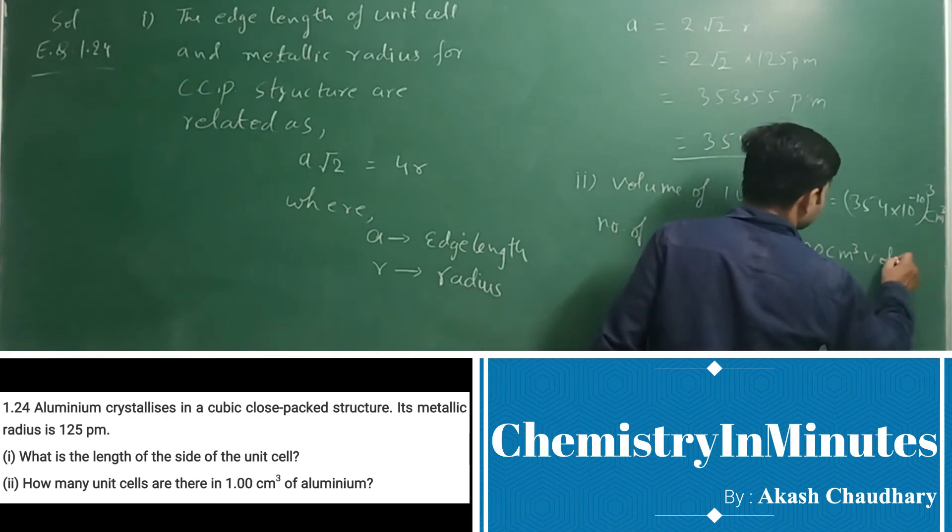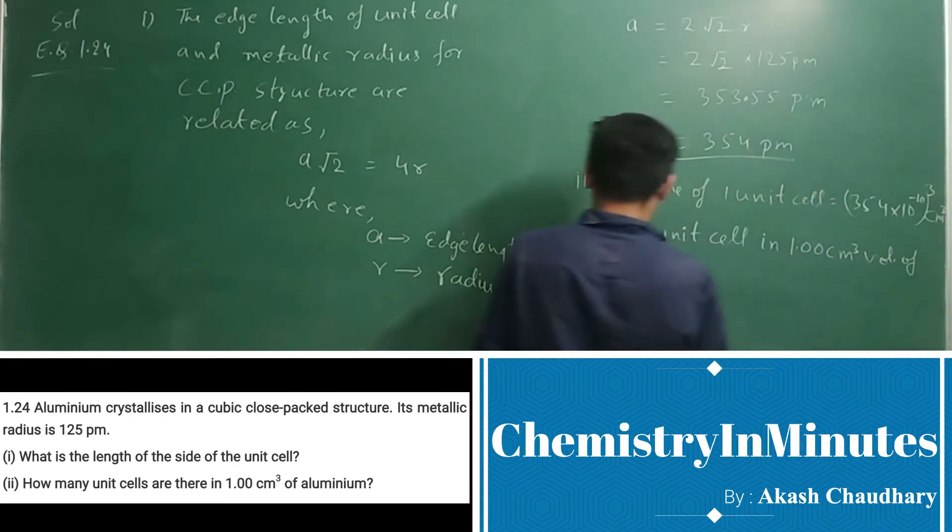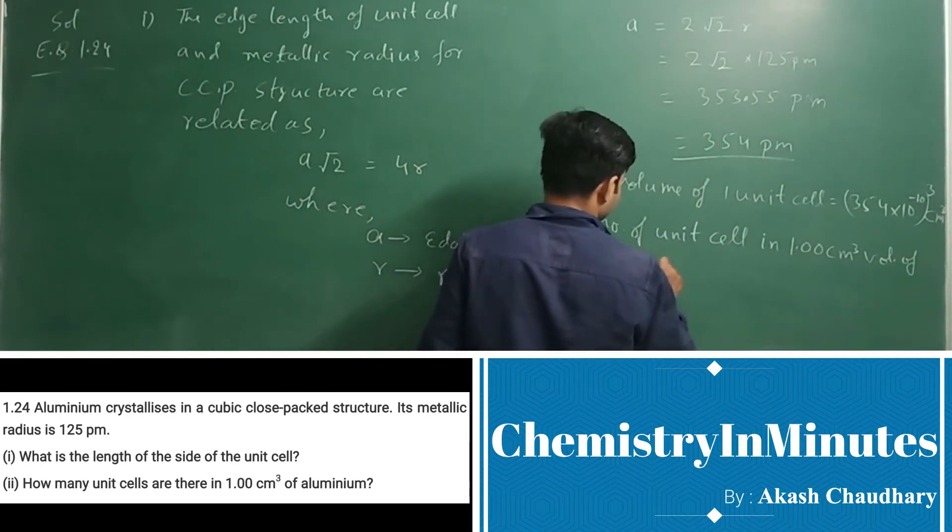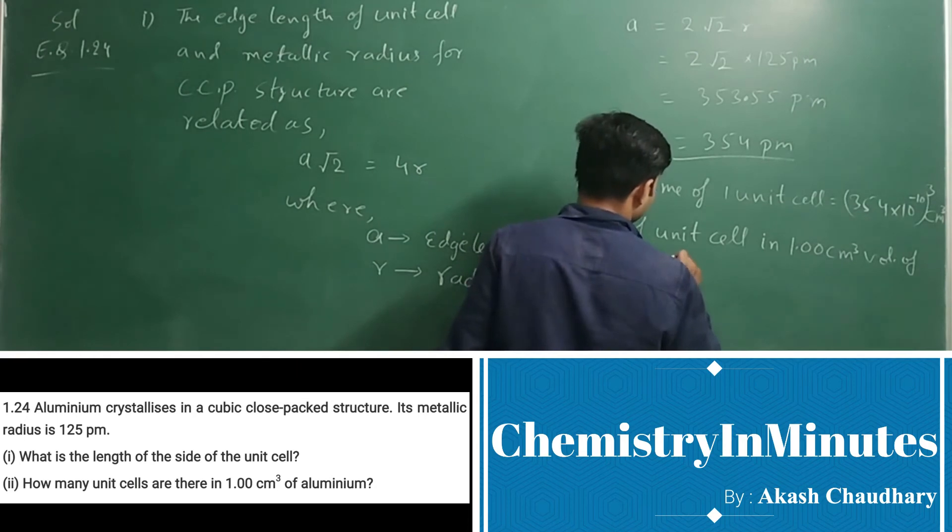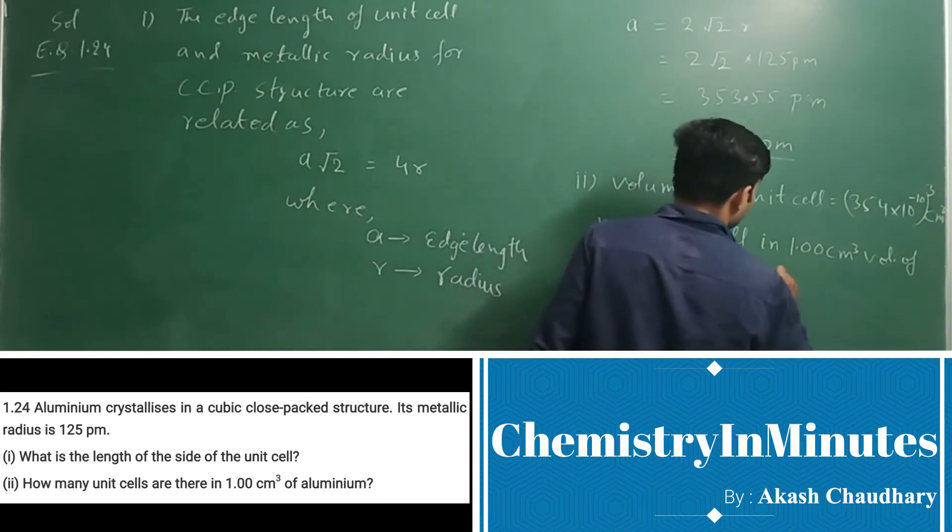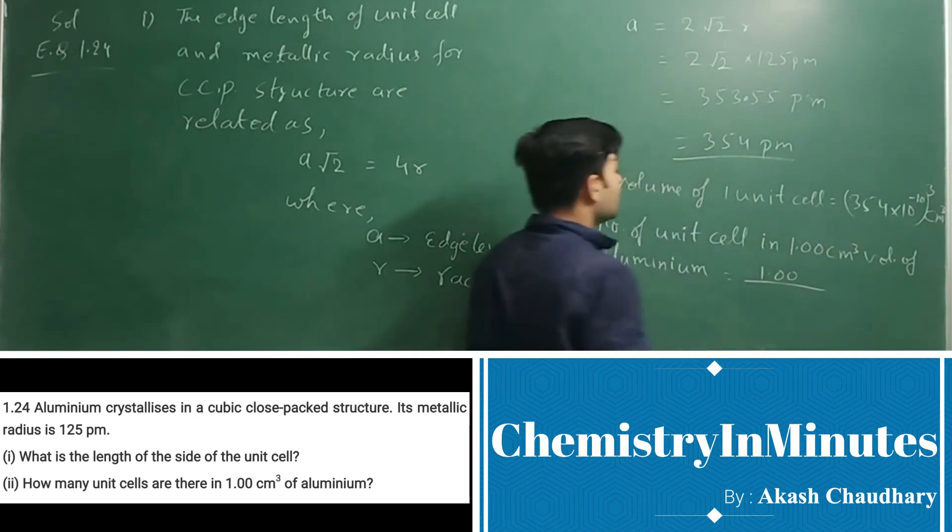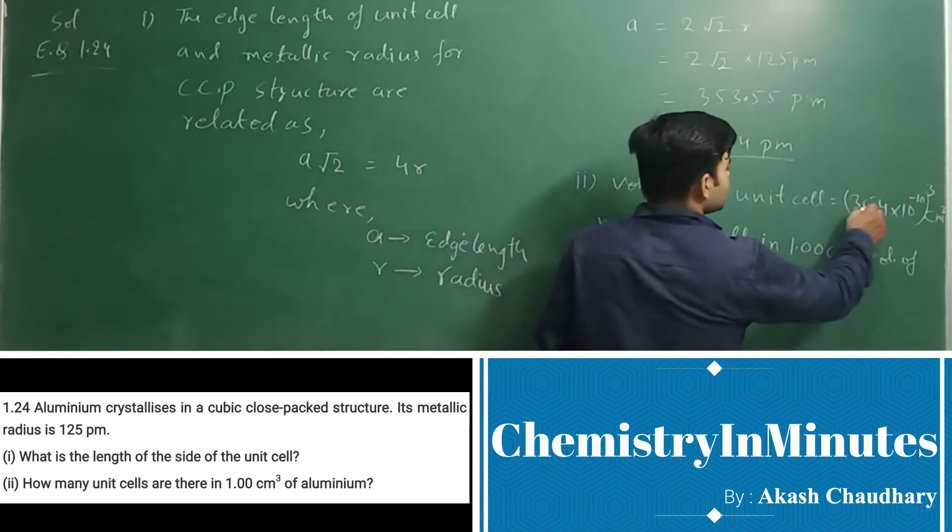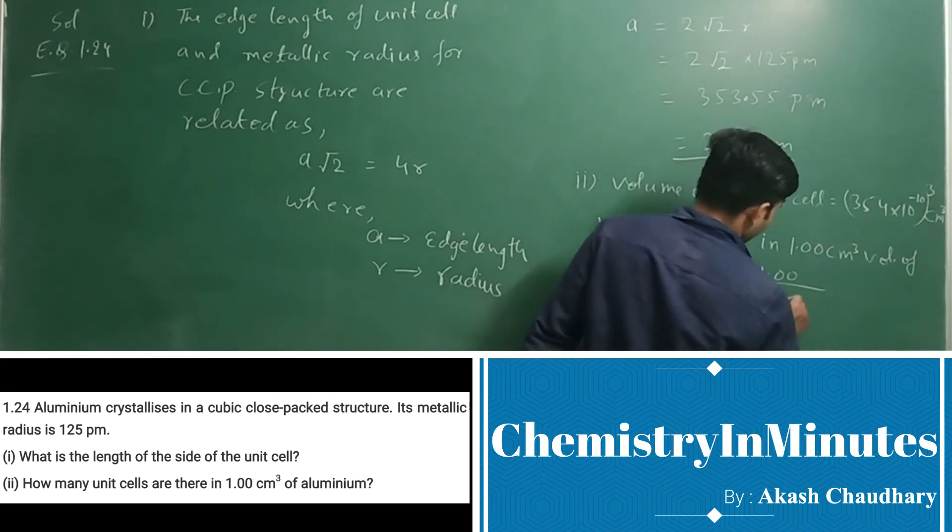Now number of unit cells in 1.00 centimeter cube, volume of aluminum. So this will be the total volume of 1.00 centimeter cube divided by volume of 1 unit cell. This we can write as (3.54 × 10^-8)³.